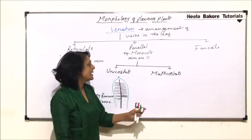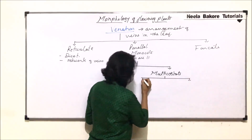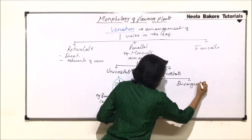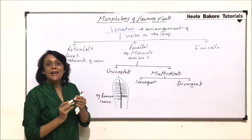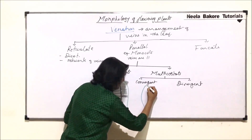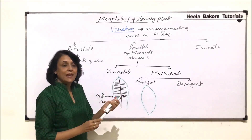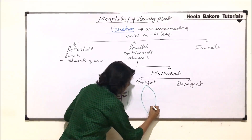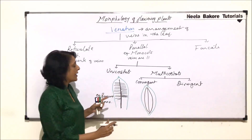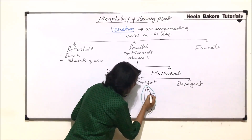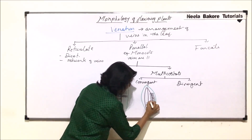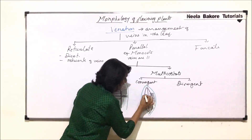In case of multicostate, we will have to classify it into two categories: convergent and divergent. Convergent means all the main veins are going to converge towards one point. So if this is the leaf, there are many main veins and these main veins are all converging to one point or towards the tip. The branching though is still parallel — the branches which arise are going to be parallel.